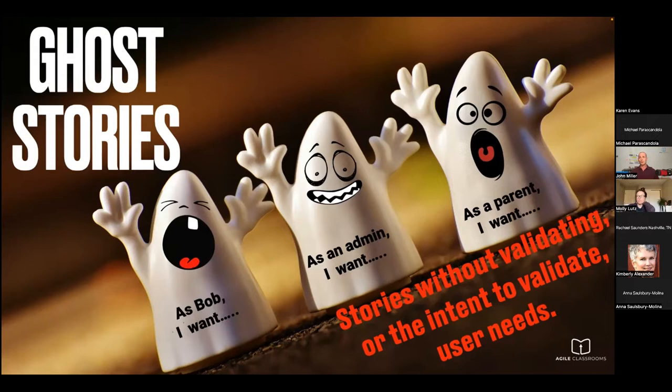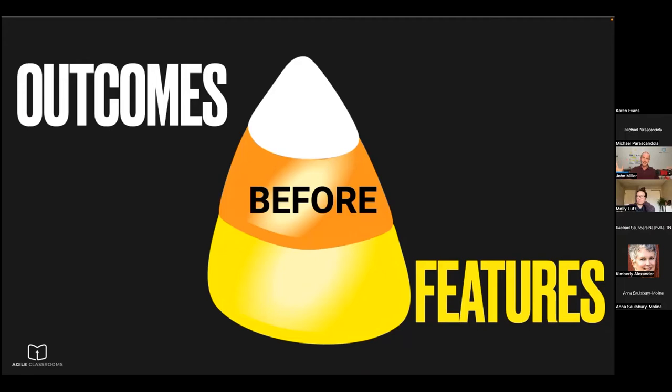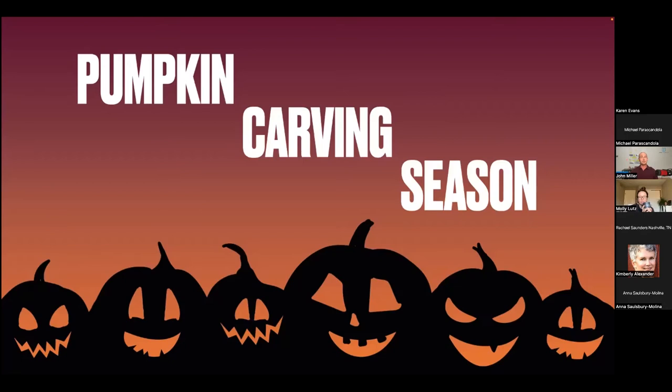The best I could come up with was candy corn as the scary thing. Outcomes before features is the way we ghost-bust this — it's been really powerful for me and I wish I'd learned it earlier. I'm sure you've heard the term outcomes over outputs. I'm going to be very clear about what we mean by outcomes and give you a concrete approach to help with this. We want to know what the outcome is — is it worth it?